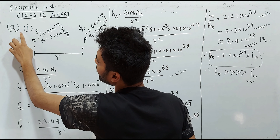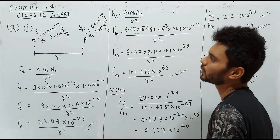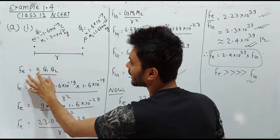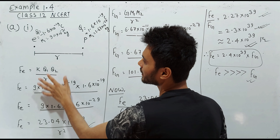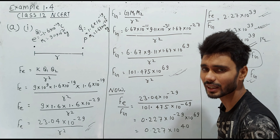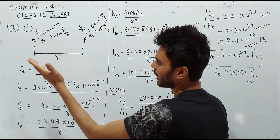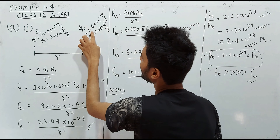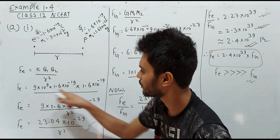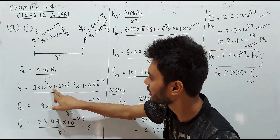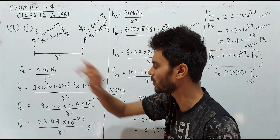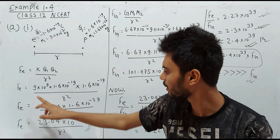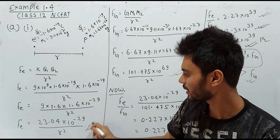Now let's solve Question 1a. First, we will calculate the electric force between the electron and proton using Coulomb's law: F = k·q1·q2 / r², where r is the distance between the electron and proton. Since r is not given, we assume it to be r. The value of k is 9×10⁹. q1 is the charge of the electron and q2 is the charge of the proton. We will not take the sign of charge here because this is the scalar form of Coulomb's law.